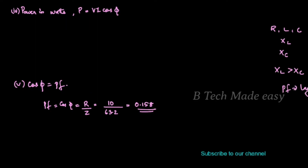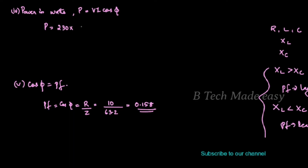This is a lagging power factor. When XL is greater than XC, the power factor is lagging. Now substituting values, P equals V into I into cos phi, where V is 230, I is 3.64, and power factor cos phi is 0.158.